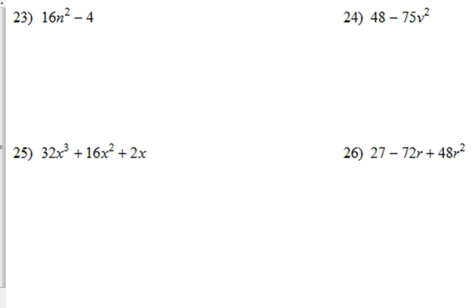A few more examples here. 23 through 26, they have GCFs. Now, 23 is the difference of perfect squares. 16 and 4 are perfect squares. However, we can still take out a GCF there. 16 and 4 have a GCF of 4. So let's start by taking out the 4.